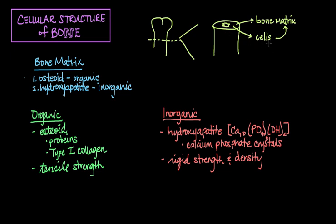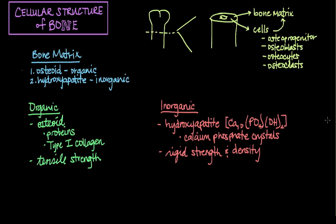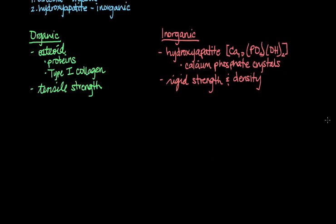There are four different types of cells to be familiar with in bone. First are the osteoprogenitor cells. Next we have osteoblasts, then osteocytes, and finally osteoclasts. You can see they all share the same root, osteo meaning bone. Let's talk about each of these cells one by one and what they do.